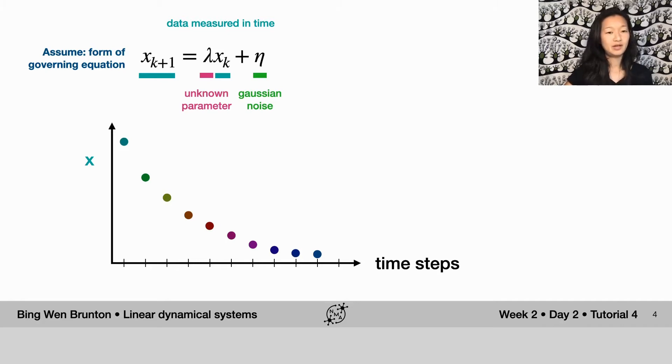What you'll notice here is if you plot your data in this way, let's look at the first two time points - our data at the first time point and the second time point. Because we know that the data does have this underlying governing equation, we know that they are related by this number lambda. It tells you how you go from one time step to the next.